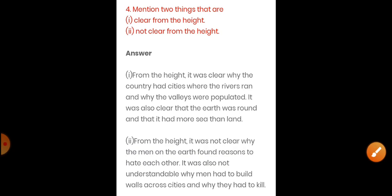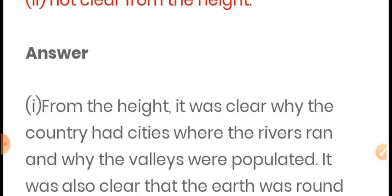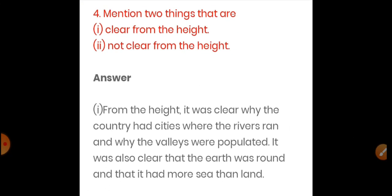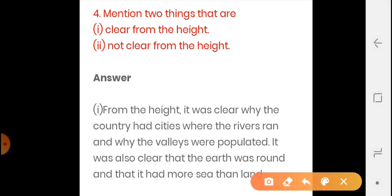The last question, question number four, is very important — if questions come from this chapter in the exam, this one is especially significant. The question asks: mention two things that are clear from the height and two things that are not clear from the height. Let us go through the answer.